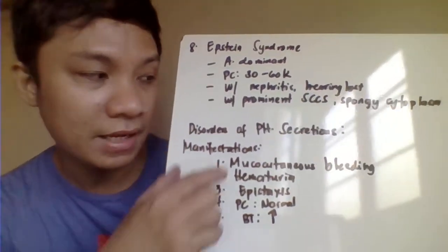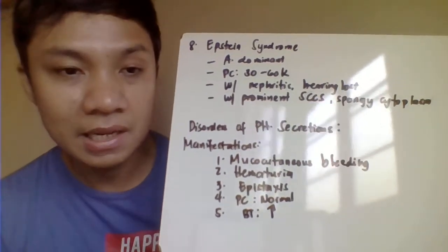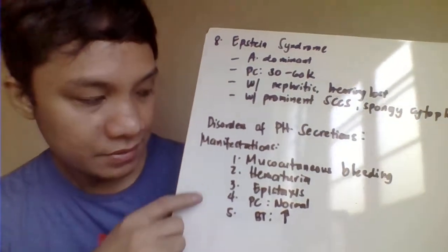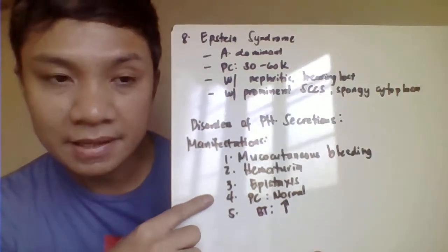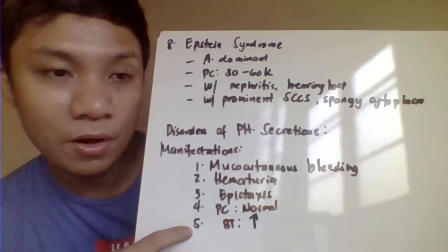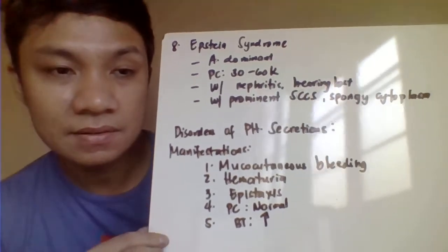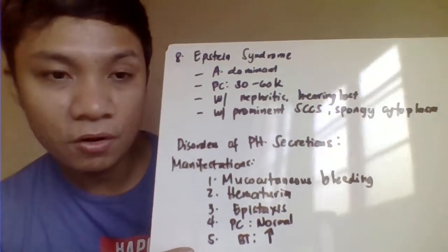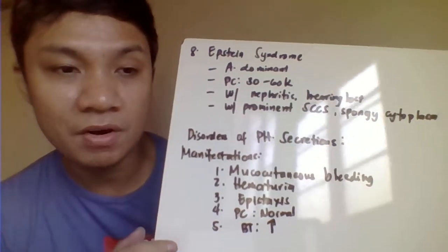Next, we go to disorders related to platelet secretion. The problem in these disorders is that platelets cannot secrete or release the content of their granules — called storage pool diseases. Manifestations include mucocutaneous bleeding, hematuria, and epistaxis. Platelet count is normal because this is a qualitative disorder. Bleeding time is prolonged, since bleeding time is a screening test for evaluation of primary hemostasis, and any problem with blood vessels or platelets will yield prolonged results.